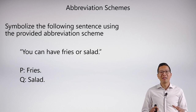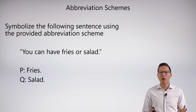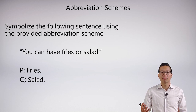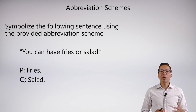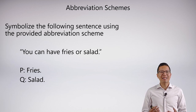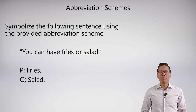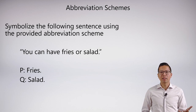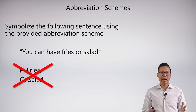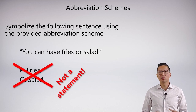Okay, this was actually a trick — this is not a real abbreviation scheme. Think about why. What's wrong with 'P: fries, Q: salad'? If you remember, P, Q, R all the way to Z are atomic statements in our language, and a statement is something that has a truth value — it has to be true or false. But if you just look at it, 'fries' is not a statement. It actually doesn't possess a truth value at all. So this is a bad example of an abbreviation scheme because none of these are statements.